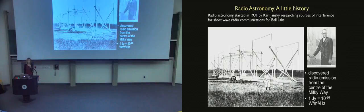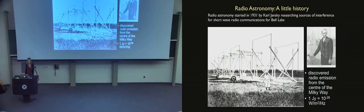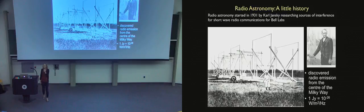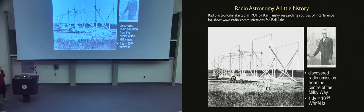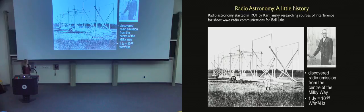Radio astronomy is actually a very new field. It only began back in the 1930s. Carl Jansky was an engineer working for Bell Labs in the USA, tasked with understanding sources of interference for shortwave radio communications. While studying shortwave radio interference, he discovered by mistake radio emission from the center of the Milky Way. In honor of Carl Jansky, we have a unit called the Jansky, which measures flux density for radio sources.